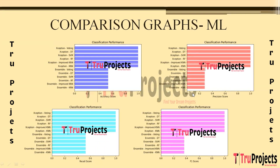The comparison graphs for machine learning algorithms include accuracy, precision, recall, and F1 score graphs. These show the machine learning algorithms built using features extracted using the Exception model, as well as those built using the proposed ensemble model. Algorithms built using Exception-extracted features are shown to perform better.